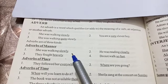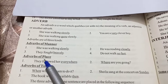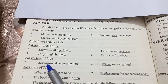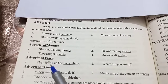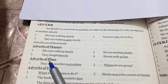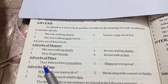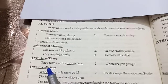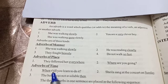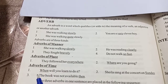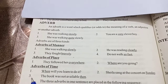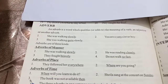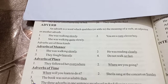The second kind is adverb of place. Adverbs of place answer the question 'where.' For example, 'They followed her everywhere' — where did they follow her? Everywhere. Another example: 'I have looked for Akhtar everywhere' — the word 'everywhere' answers the question 'where.'